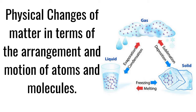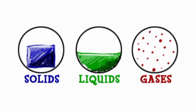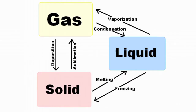Today we are going to talk about phases of matter — physical changes of matter in terms of the arrangement and motion of atoms and molecules. Now that we've talked about the different phases — solid, liquid, gas — we're going to talk about how matter transitions from one phase to another phase.